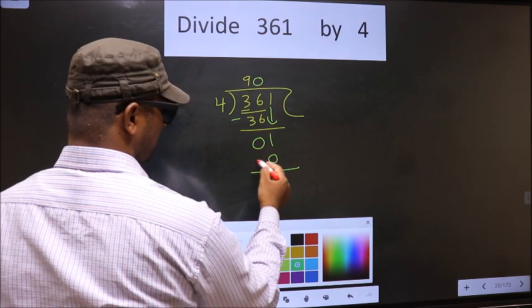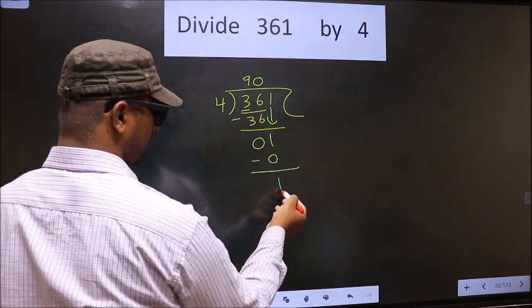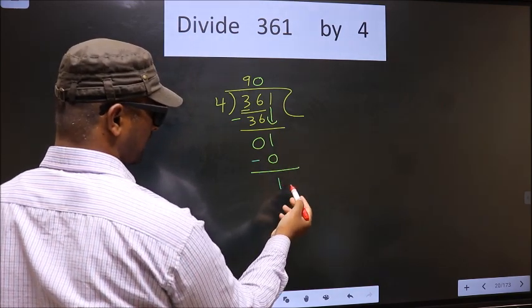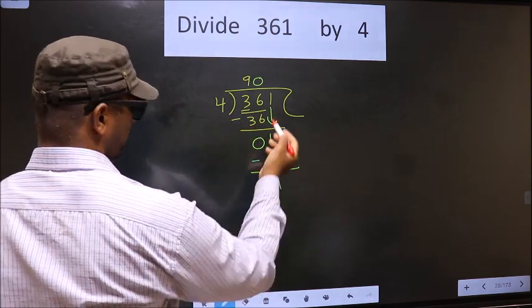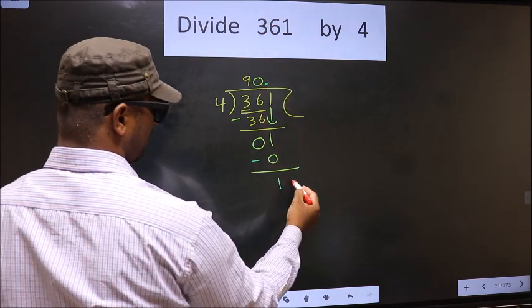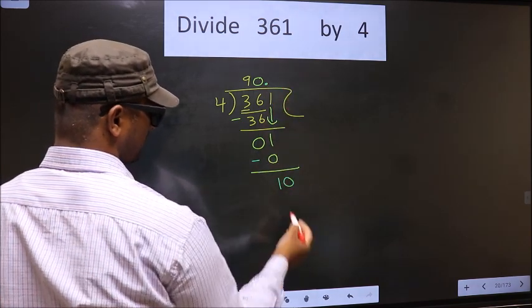Now, you subtract 1 minus 0, 1. Over here, we did not bring any number down. And 1 is smaller than 4. So, what we do is, we put a dot and take 0 here. Now, here 10.